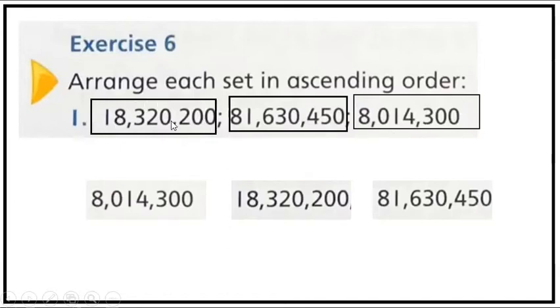Number one: eighteen million three hundred and twenty thousand two hundred. Second: eighty one million six hundred and thirty thousand four hundred and fifty. Last: eight million fourteen thousand and three hundred.